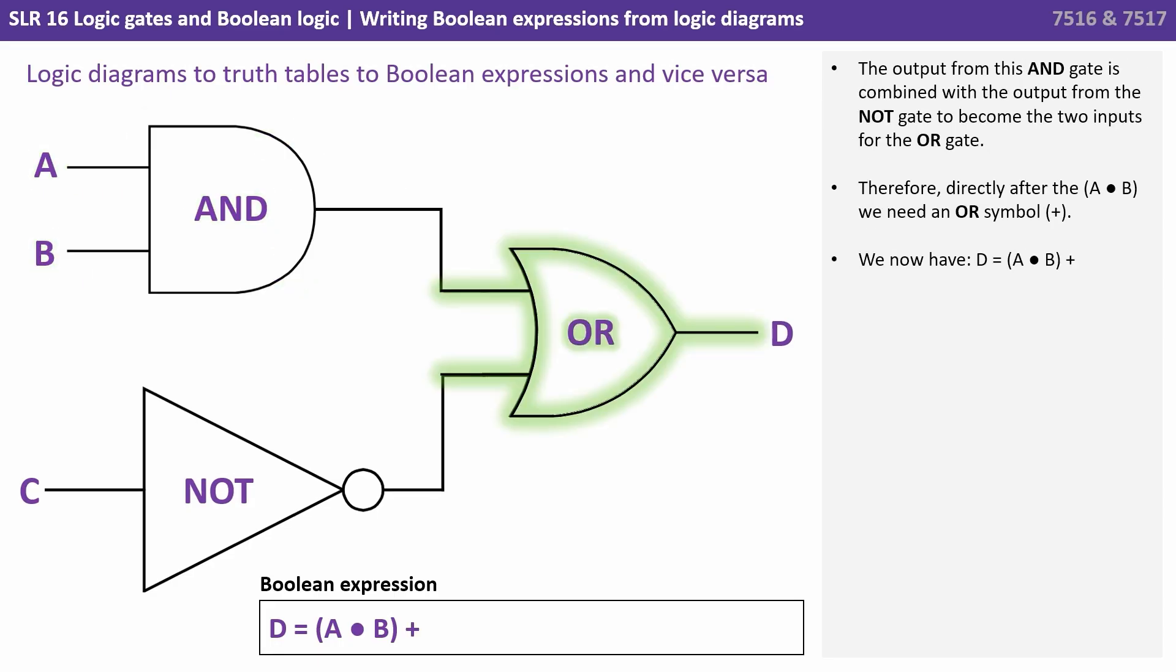The output from this AND gate is going to be combined with the output from the NOT gate to become the two inputs for the OR gate.